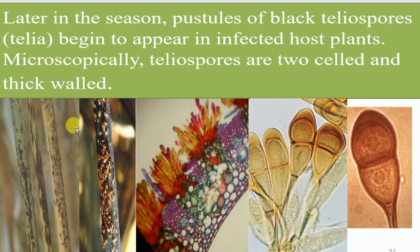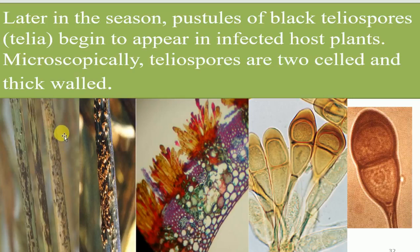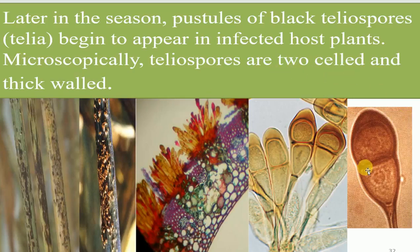Later in the season, pustules of black teliospores begin to appear in infected hosts. Microscopically, teliospores are two-celled and thick-walled. After the maturity of urediniospores, the pathogen develops into teliospores, and when fully matured, it becomes two-celled and thick-walled, as visible under the microscope.